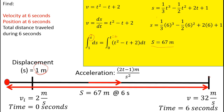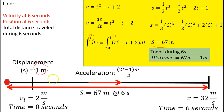The last portion is the total distance traveled just during the 6-second window — from when we started the clock to when we ended it. We take away that initial 1 meter from the origin, so the distance traveled equals 67 minus 1 meter, which is 66 meters.